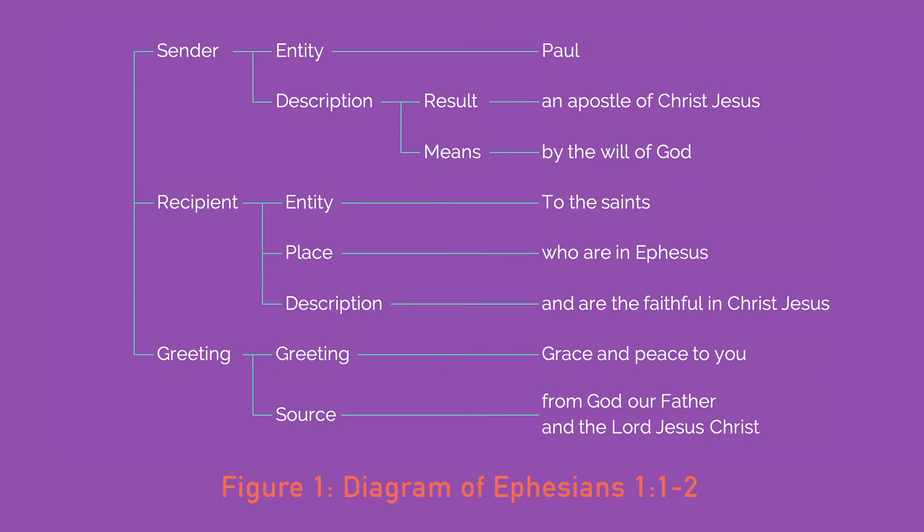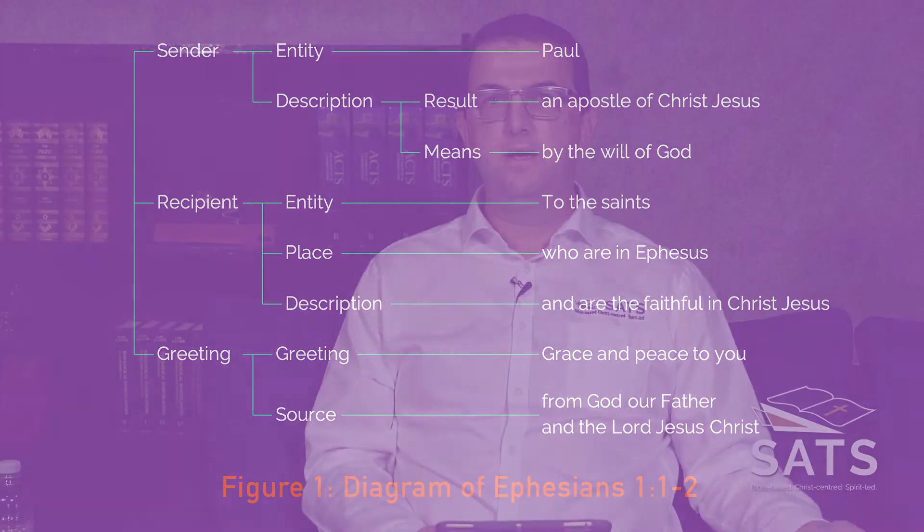If we scroll down a little bit, you see the recipients of the letter — to whom was it written? It's to God's holy people. And then the last component is the greeting: grace and peace to you. These three are on the extreme left-hand side of our diagram because they are the three main propositions in this opening greeting. Under the sender, Paul, he tells us he is an apostle of Christ Jesus — this is there to identify which Paul it is. And then we're told how he became an apostle: by the will of God, which is the means by which he became an apostle.